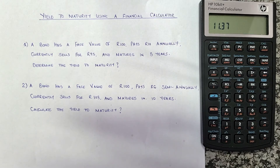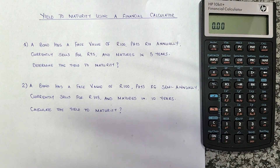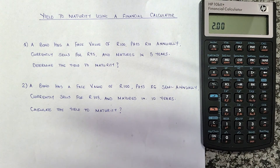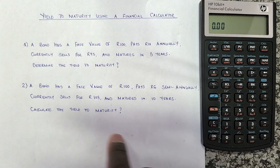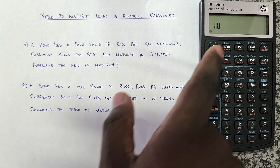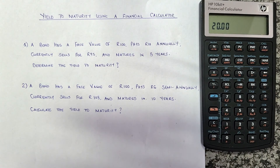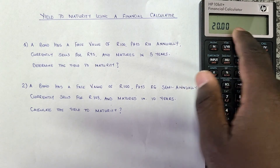We need to check the payment period. Since it pays semi-annually — twice per year — we must set the calculator to compound twice per year. Currently it shows 1 per year from our previous setting, so we press 2, then the orange button, then PMT. Press the orange button and C to confirm it now shows 2 per year. For the number of years — 10 years — since it's compounded more than once per year, we press 10, then the orange button, then N. This multiplies the years by the compoundings per year, giving us 20 periods.